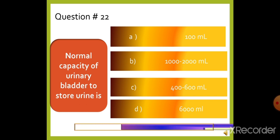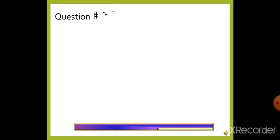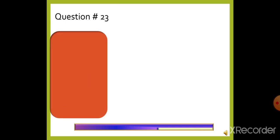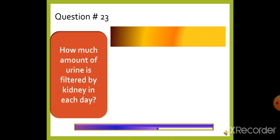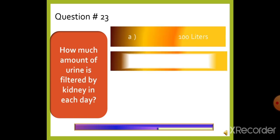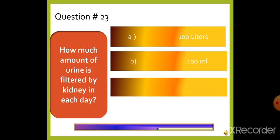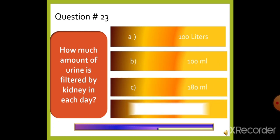Question 23: How much urine is filtered by the kidney each day? — option A: 100 ml, option B: 100 ml, option C: 180 ml, or option D: 180 liters. The right answer is option D, 180 liters.